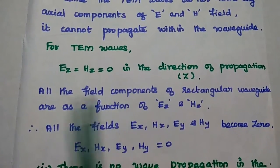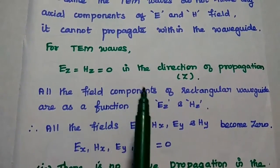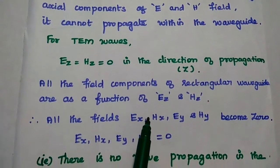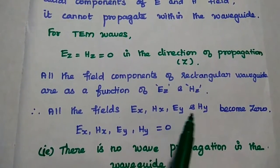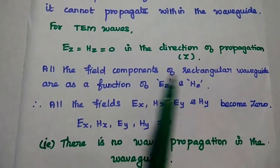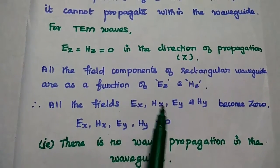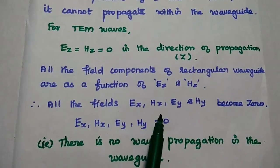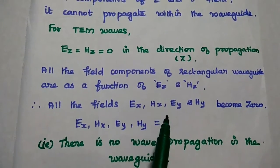So here, since Ez and Hz is equal to zero, all the fields Ex, Hx, Ey, and Hy become zero. Since all the field components become zero, there is no wave propagation inside the waveguide.